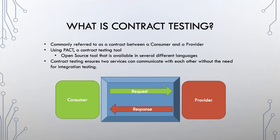We can utilize a contract testing tool called PACT, which is an open source tool available in several different languages. It allows us to create a contract out of that request and response — that middle layer, that interaction between the consumer and the provider. Contract testing really ensures two services can communicate with each other without the need of integration testing, which can be very expensive, very slow, and require a large amount of effort to implement.